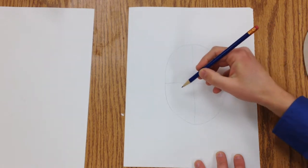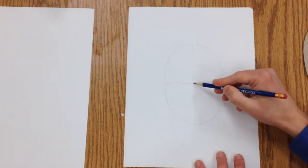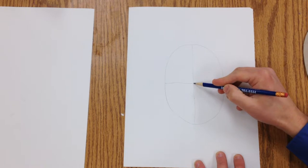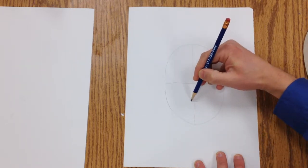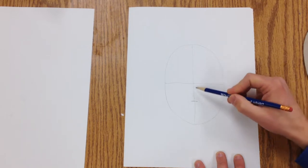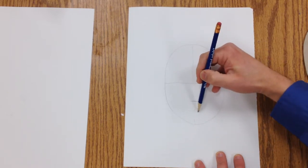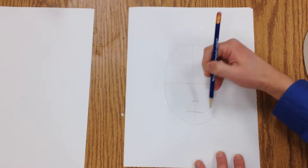So next, we're going to draw a line that's halfway between the eye line and the chin, and that's going to be where we place our nose later on. Then halfway between the nose and the chin is going to be where we put the mouth.